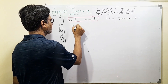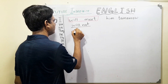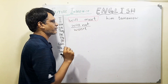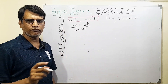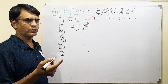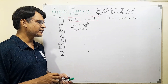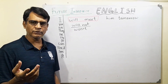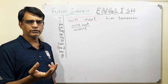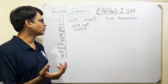The negative is 'will not', or the short form 'won't', and then the first form of verb. So you say: 'I will not meet him tomorrow.' 'You will not meet him tomorrow.' 'He will not meet him tomorrow.' 'She will not meet him tomorrow.' Or the short form: 'Sam won't meet him tomorrow.' 'Tom and Sam won't meet him tomorrow.' 'It won't meet him tomorrow.'